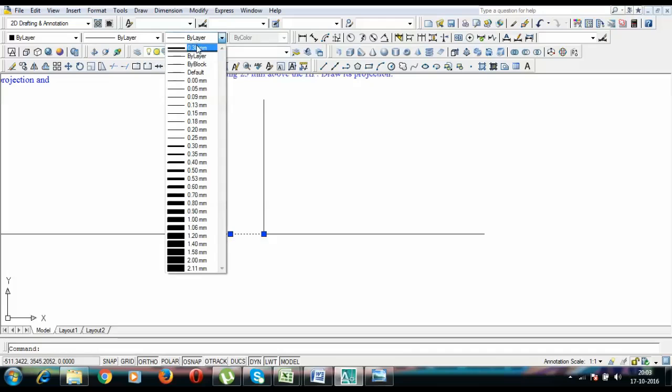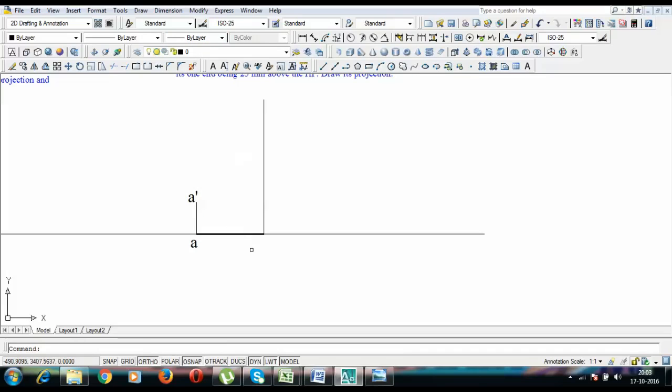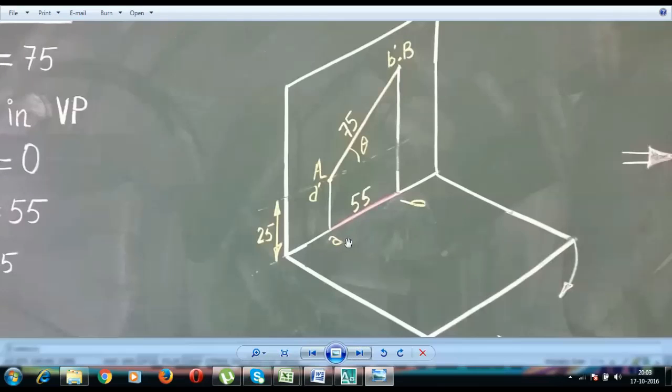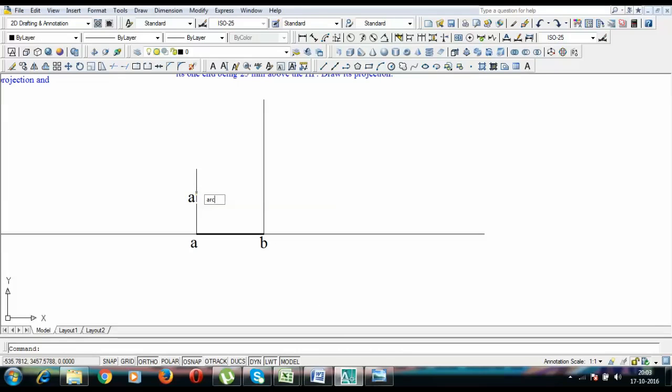This over here is the top view, final top view, and I'm going to write here point B. You can actually compare these two figures. This is A, this is B, 55 millimeters, and then we've gone up ahead. From A dash as center, I'm going to put an arc over here in order to find this location of B dash. This arc is going to have a radius of 75 millimeters. With A dash as center and with 75 millimeters as the radius, I'm going to put an arc over here.